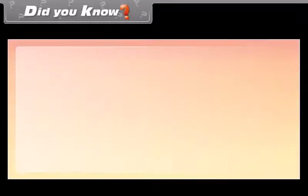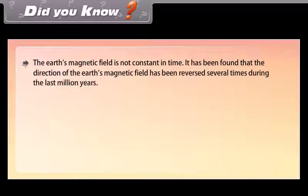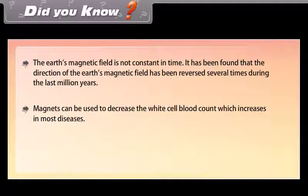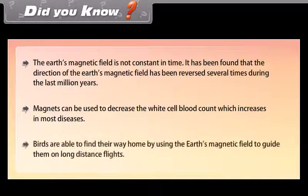Did you know: the Earth's magnetic field is not constant in time. It has been found that the direction of the Earth's magnetic field has been reversed several times during the last million years. Magnets can be used to decrease the white blood cell count, which increases in most diseases. Birds are able to find their way home by using the Earth's magnetic field to guide them on long distance flights.